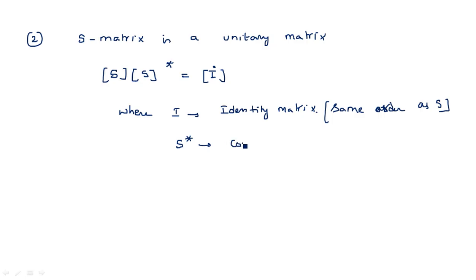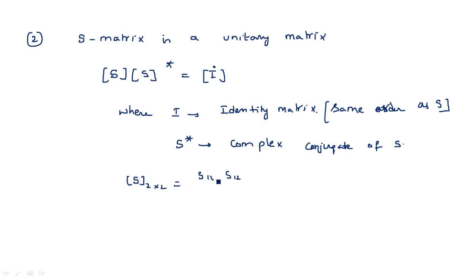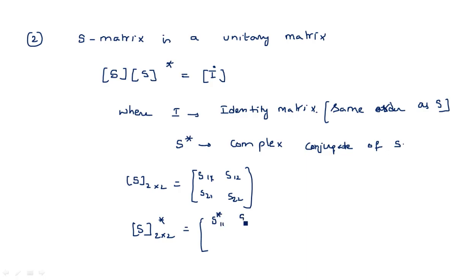For example, if S is a 2×2 matrix with elements S11, S12, S21, S22, then S* is also a 2×2 matrix containing the complex conjugates of each individual parameter: S11*, S12*, S21*, S22*. This is the second property.